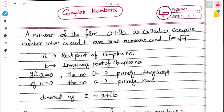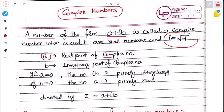What is a complex number? A number of the form a + ib is called a complex number, where a and b are real numbers and i = √(−1). Here, a is called the real part of the complex number and b is called the imaginary part of the complex number.